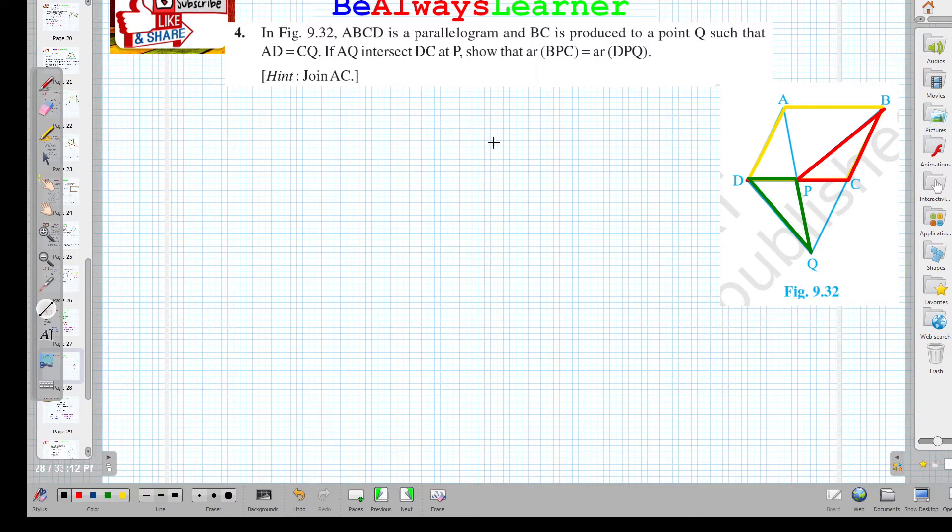For the construction, we are using the hint here. We write: join A, C.